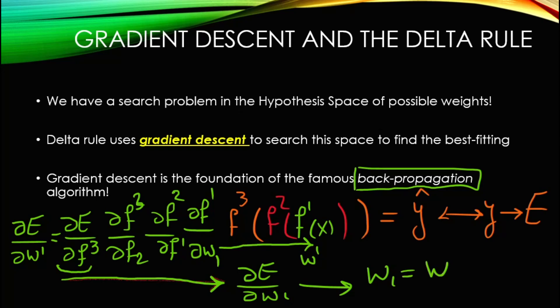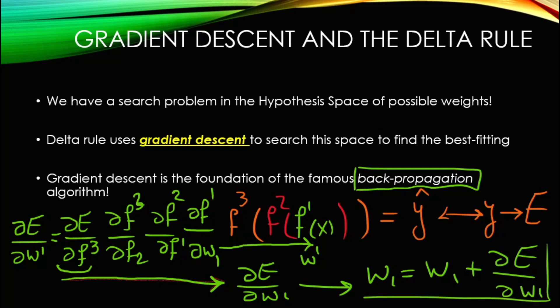You then say: w1 equals the old value of w1 plus the sensitivity. This is more or less the story of why we care about the delta rule — because the delta rule uses gradient descent to find the best fitting model to the data, and gradient descent is the foundation of the famous backpropagation algorithm. If you understand the delta rule, you gain the ability to understand how to train different types of neural networks.